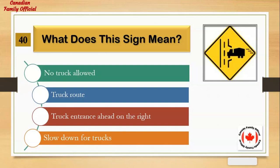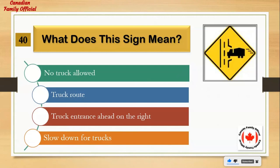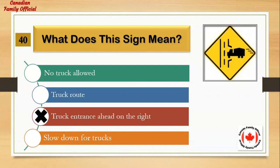What does this sign mean? Number 1: no truck allowed. Number 2: truck route. Number 3: truck entrance ahead on the right. Number 4: slow down for trucks. And the answer is: truck entrance ahead on the right.